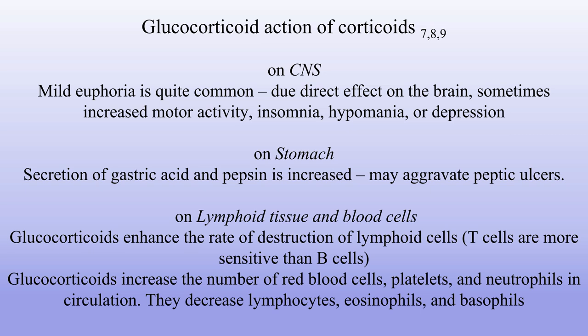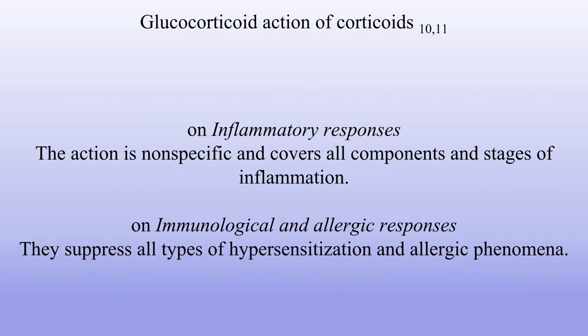Action on lymphoid tissue and blood cells. Glucocorticoids enhance the rate of destruction of lymphoid cells; T cells are more sensitive than B cells. Glucocorticoids increase the number of red blood cells, platelets and neutrophils in circulation. They decrease lymphocytes, eosinophils and basophils. Action on inflammatory responses: the action is nonspecific and covers all components and stages of inflammation. Action on immunological and allergic responses: they suppress all types of hypersensitization and allergic phenomena.